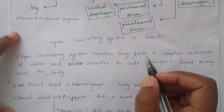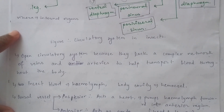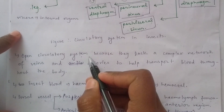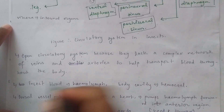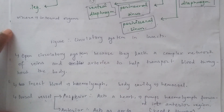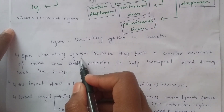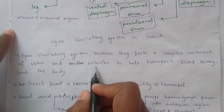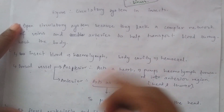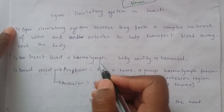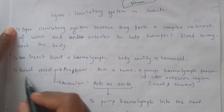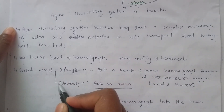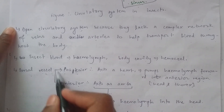Insects have an open circulatory system, because they lack a complex network of veins and arteries to help transport blood throughout the body. The body cavity is called the hemocoel. We can divide the body into the anterior and posterior portions.